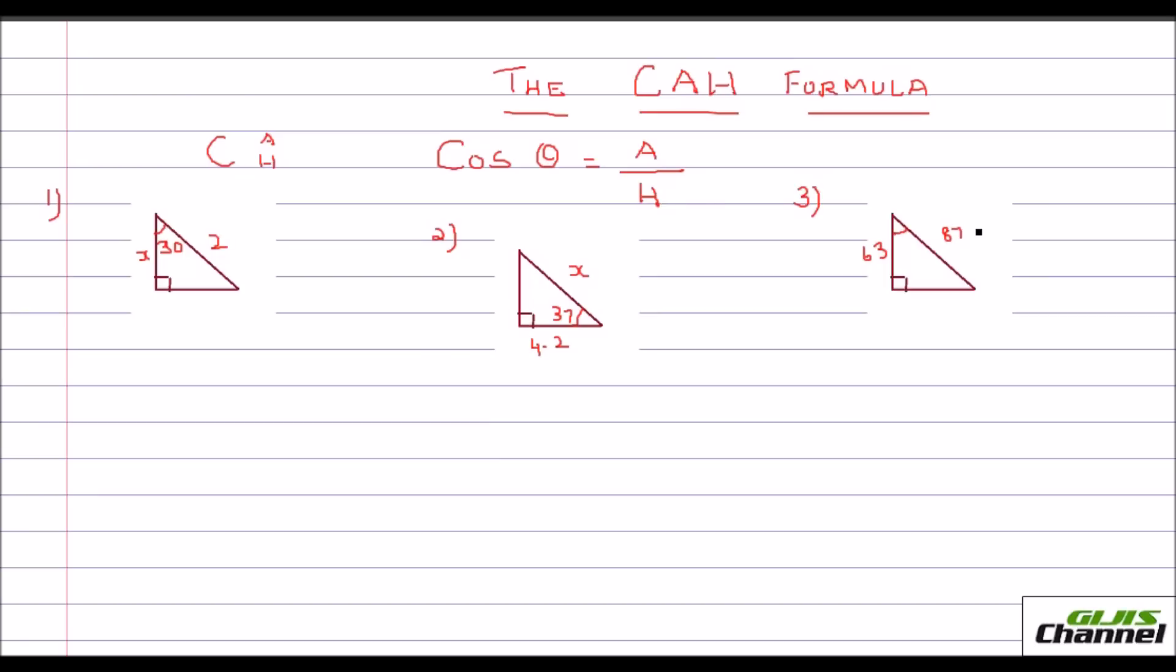In order to find the cosine of a triangle in trigonometry, you will need to understand the CAH formula, which is a part of the larger mnemonic of SOH, CAH, TOA.